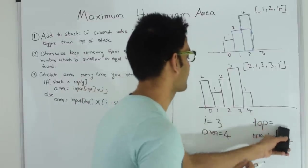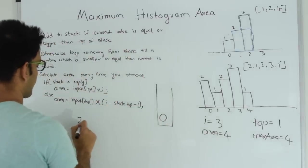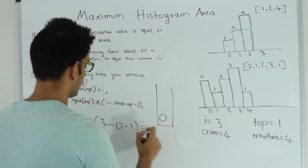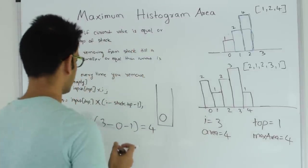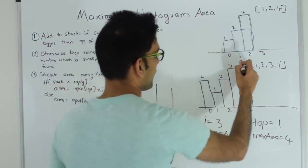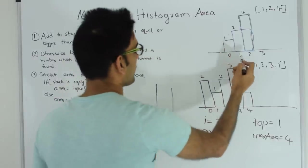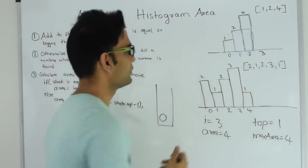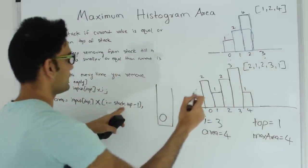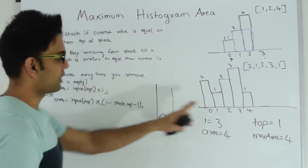Now top becomes 1, I remove that from the stack. Since the stack is not empty, area = input[top] × (i − stack_top − 1) = 2 × (3 − 0 − 1) = 4. Area is 4 so max area stays 4. What happened here is: everything from top to i has at least value 2, and everything from i down to 0 (not including 0) is also at least value 2, so we can safely multiply 2 by that difference to get the area.